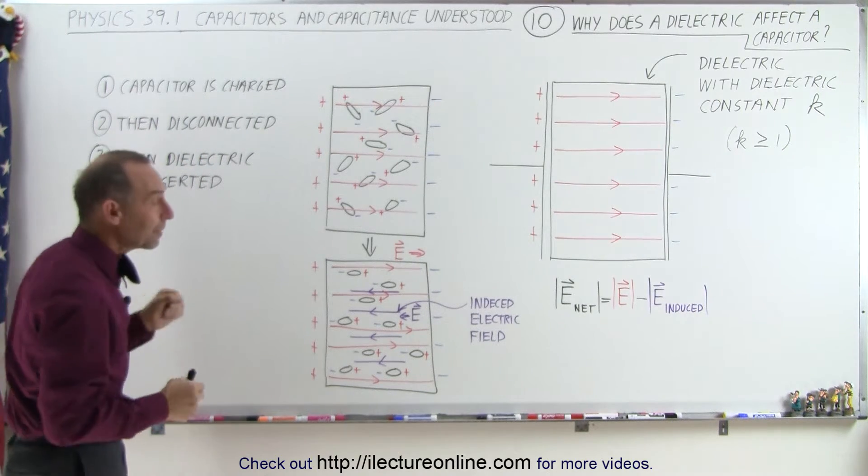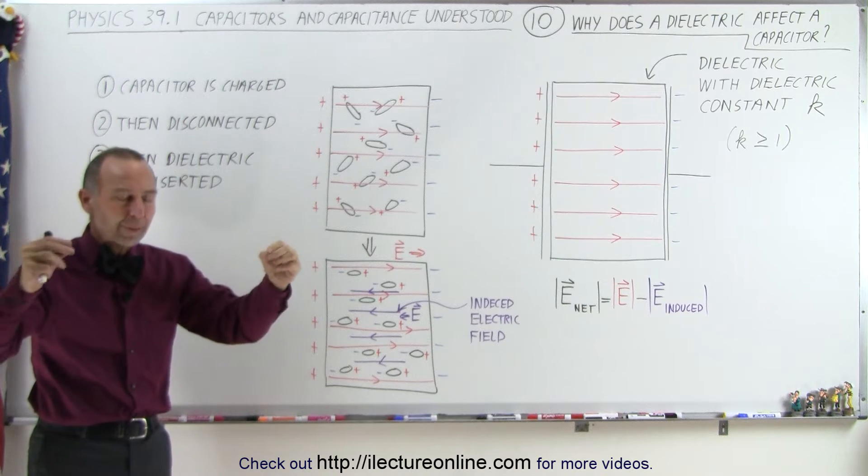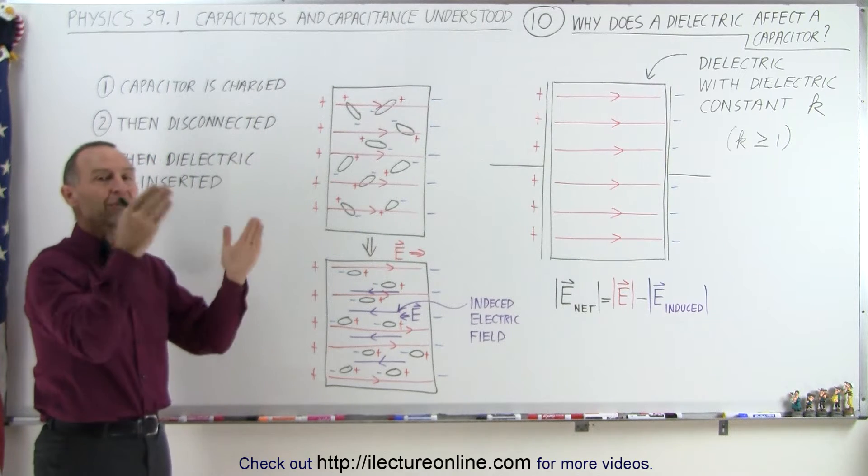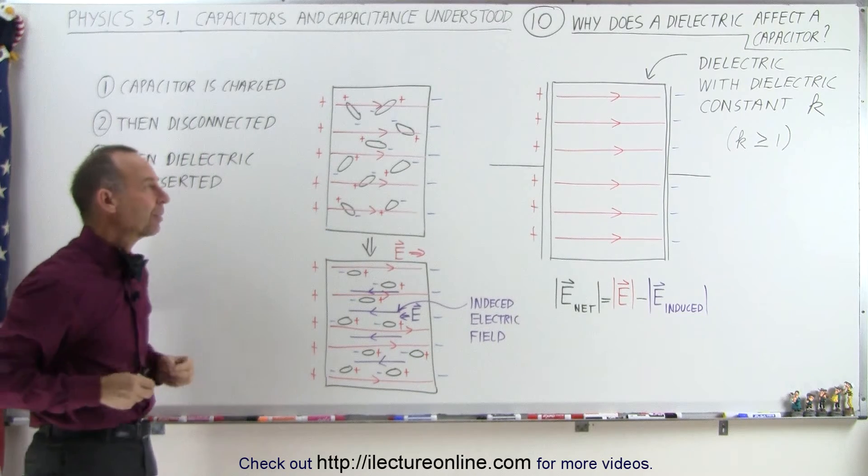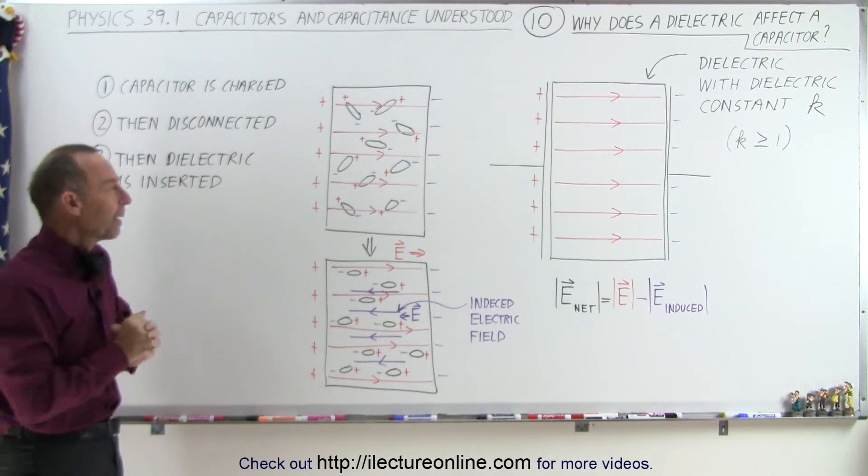First of all, we're going to take a capacitor, connect it to a battery, and allow the capacitor to be fully charged until no more charge flows on the capacitor. Then we're going to disconnect the battery so we have a fully charged capacitor.